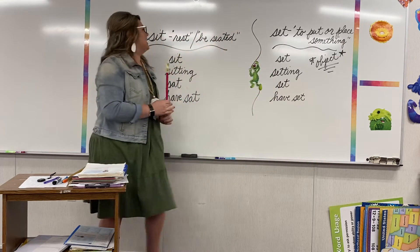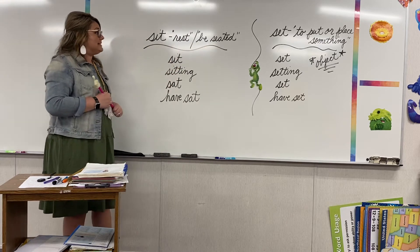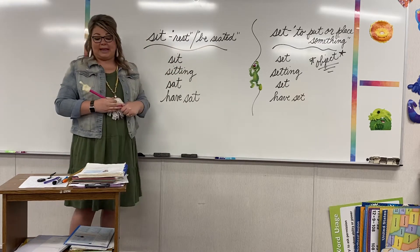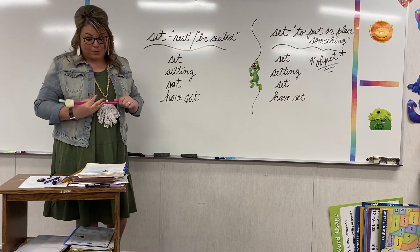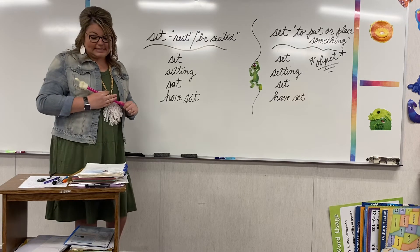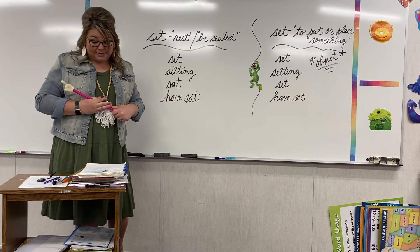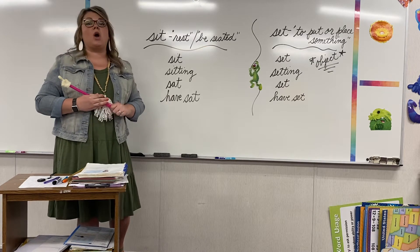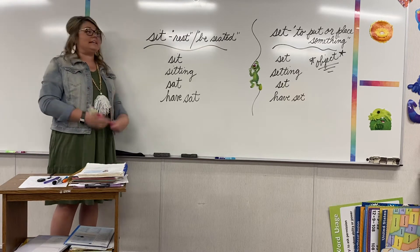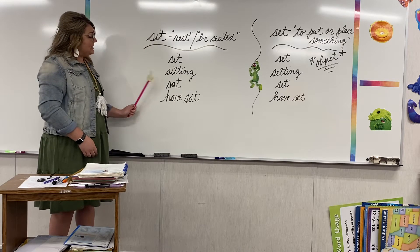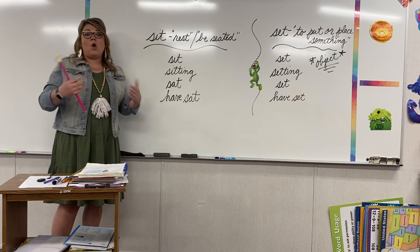Our first word we're going to look at is sit. Sit means to rest or to be seated. Some examples would be: Tim and I sit in the same row. You could say Tim is sitting two seats behind me. He sat there last month, or he has sat there all year. So here are the different forms you can use with sit: sit, sitting, sat, have sat. Whenever you are using sit, you are talking about resting or being seated.